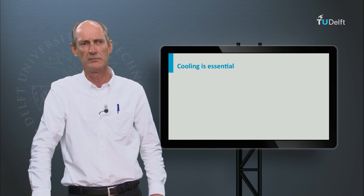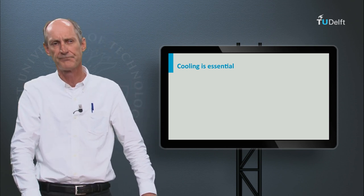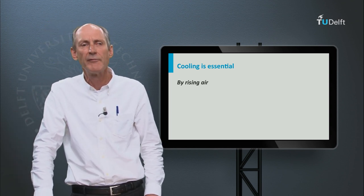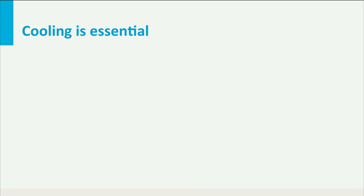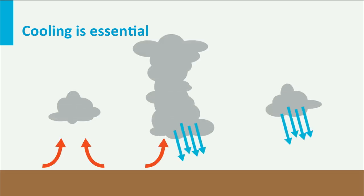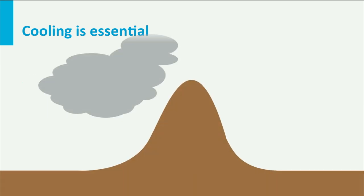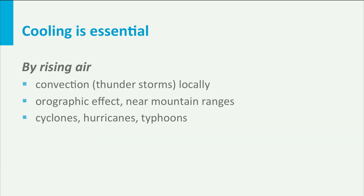So we see that cooling is essential and we also notice that clouds are formed by rising air. What can be the causes of rising air? There can be several, and all of them have different characteristics. There is convection by thunderstorms, orographic effects near mountain ranges, and then we have tropical cyclones, hurricanes or typhoons.